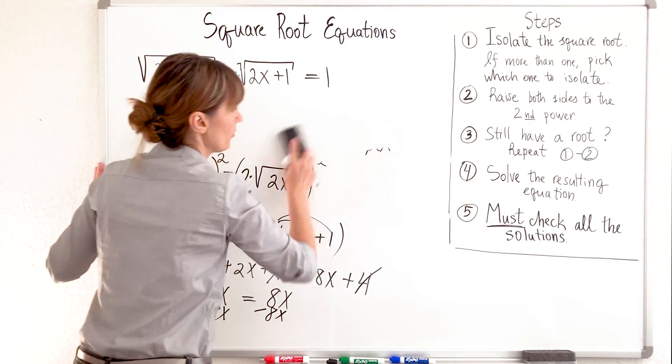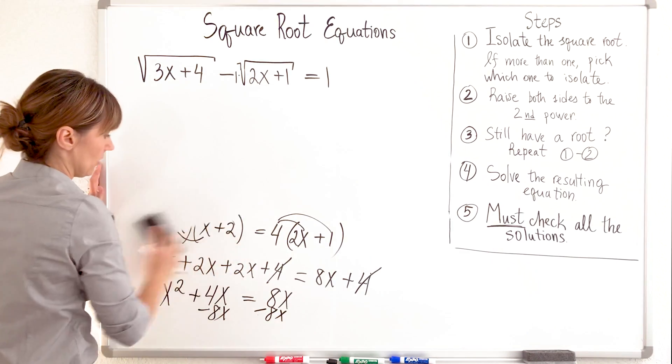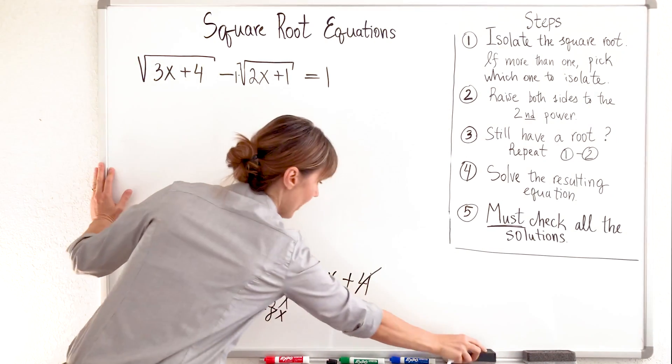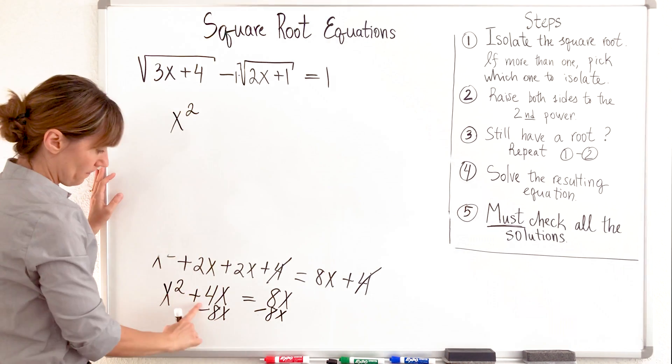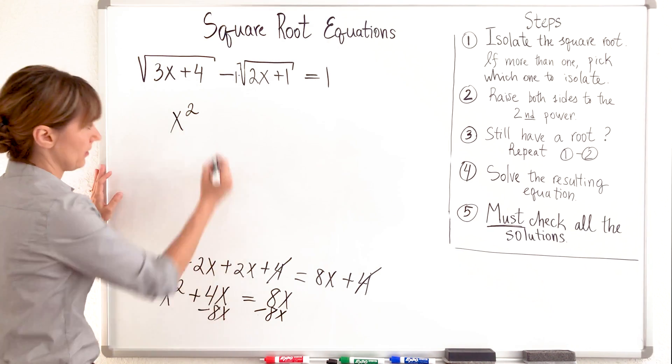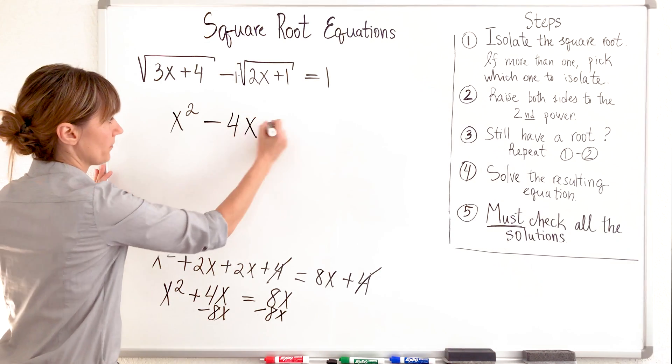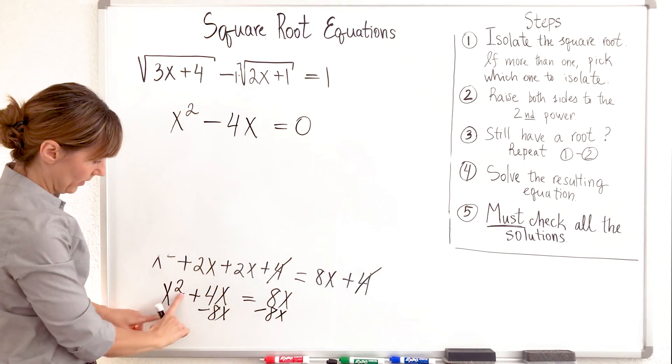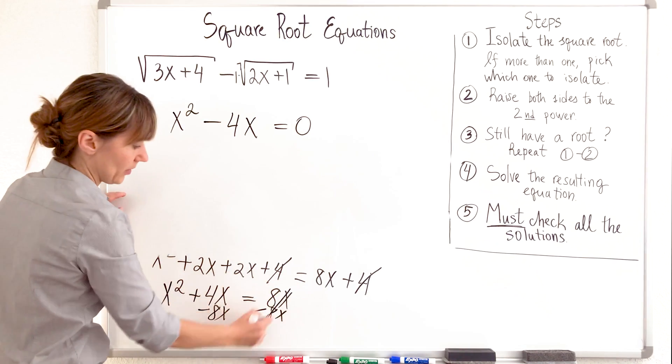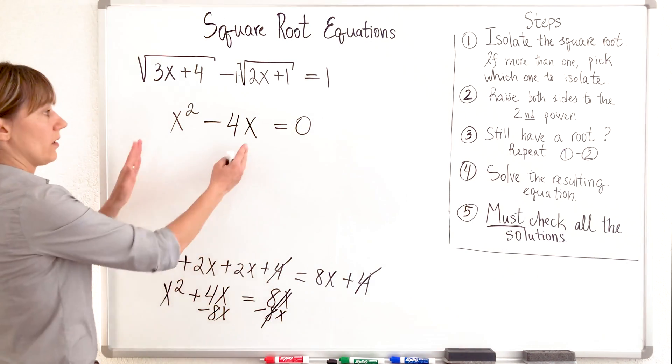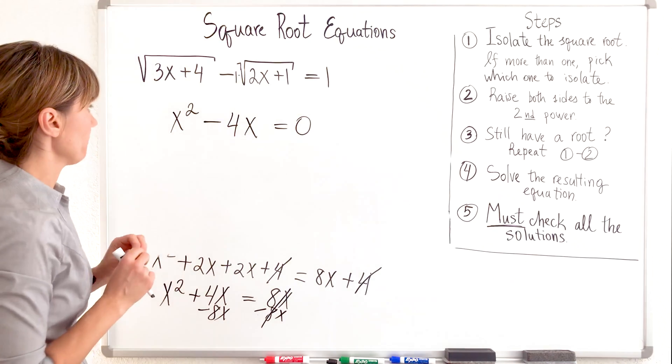What do I have here? x squared, 4 minus 8 minus 4x equals 0. Let's just check. x squared plus 4x. We are subtracting 8x. And this becomes 0. Nice. Much nicer now. Look, this is a quadratic equation, but I don't have a constant term.